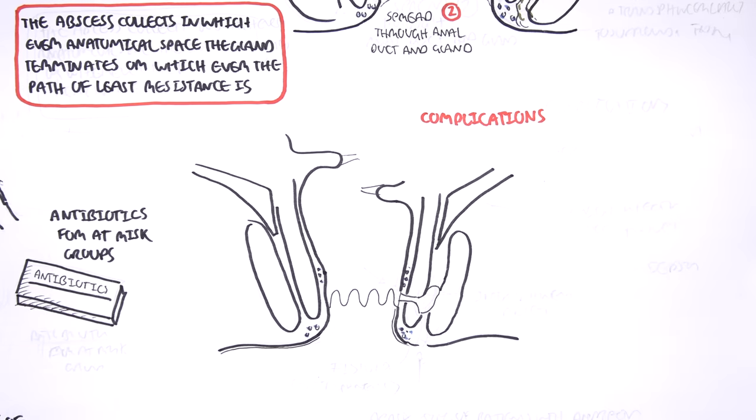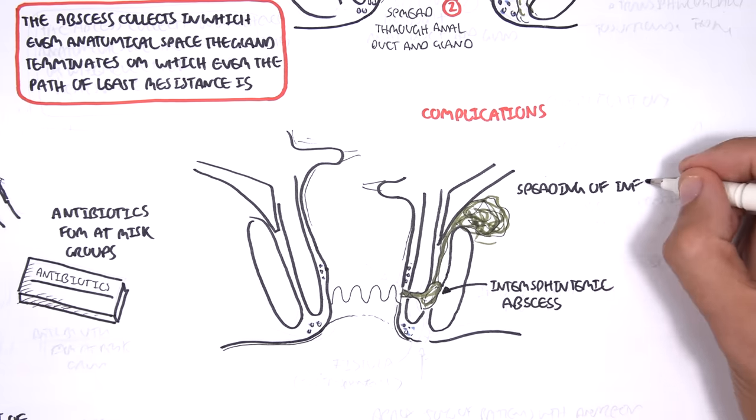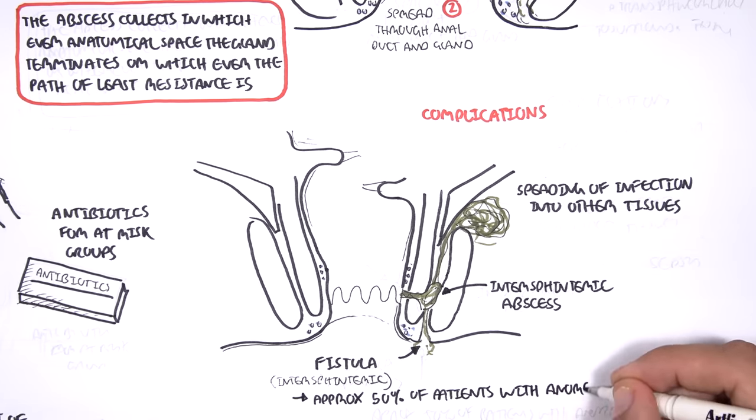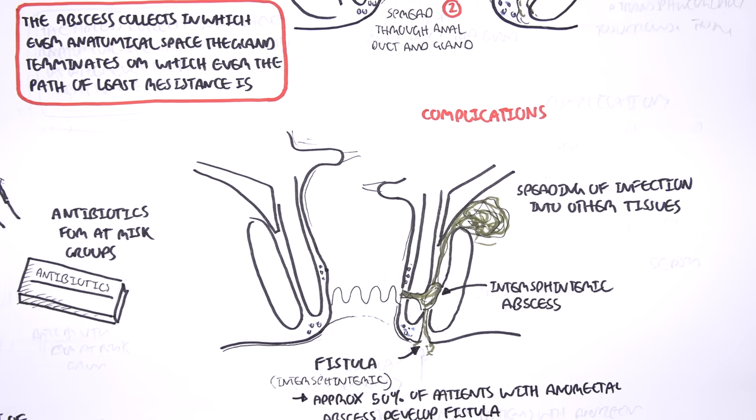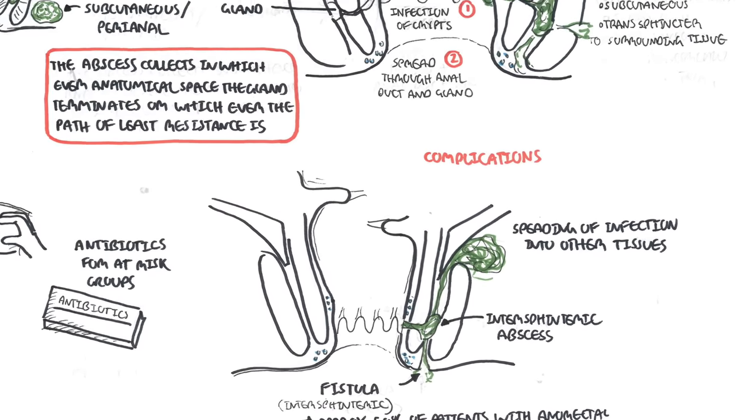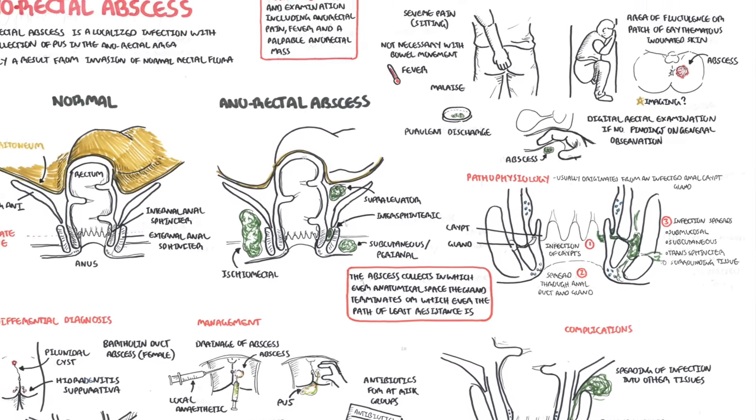Complication of anorectal abscess includes spreading to other tissues as well as the development of a fistula. In this case, an intersphincteric abscess can cause an intersphincteric fistula. Approximately 50% of patients with anorectal abscess will develop a fistula, and so assessing or looking for a fistula and managing it together is very important.